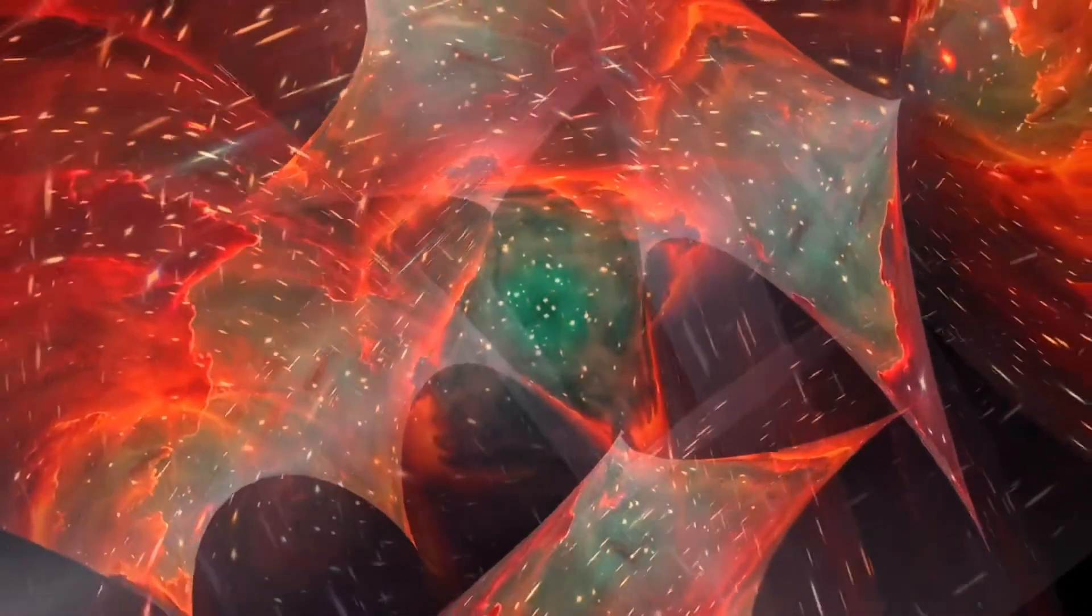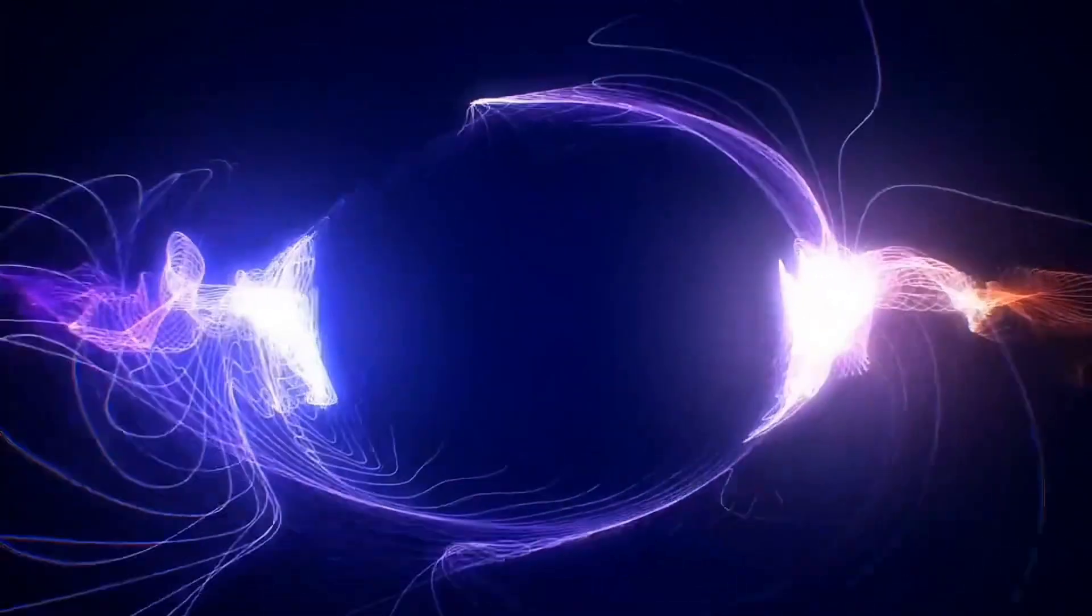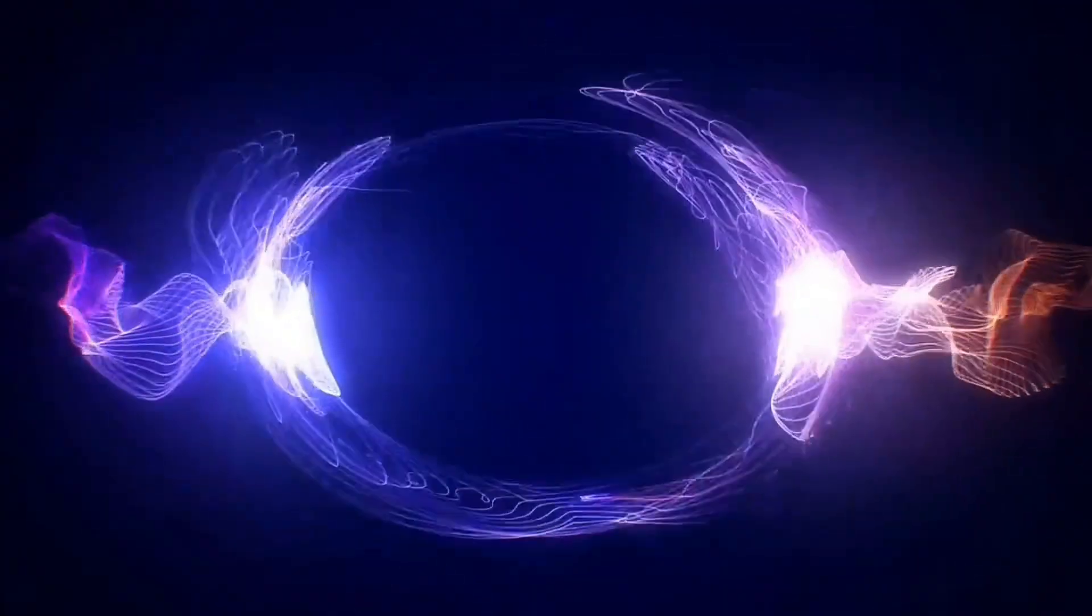Schwinger's idea emerged from the heart of quantum field theory, a framework that describes reality not as particles moving through space, but as fields interacting through energy. In this view, particles are simply ripples, temporary excitations of these invisible fields. So if one could apply enough energy to the vacuum, it might shake those fields violently enough to make those ripples permanent: matter itself pulled from the void.